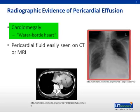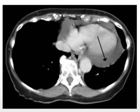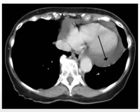The x-ray in the top right of the slide shows a very large, round-shaped heart due to a large pericardial effusion. This is often called a water bottle heart due to its globular appearance. A CT scan at the bottom of the slide shows a pericardial effusion more distinctly. The effusion is the darker gray surrounding the lighter colored heart, and the black arrow in the figure is pointed to the pericardial fluid.